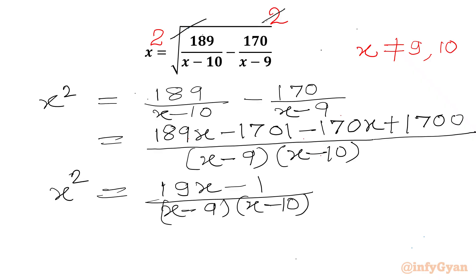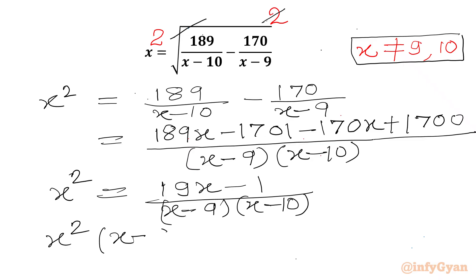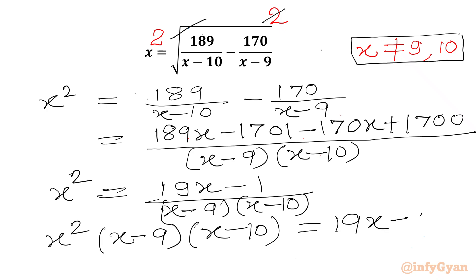LHS is x². Since x cannot be 9 and 10, we can cross multiply and write x² times (x minus 9) times (x minus 10) equal to 19x minus 1.